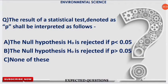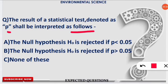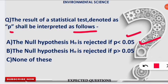The next question is about interpreting the p-value of a statistical test. The correct interpretation: if the p-value is less than 0.05, we reject the null hypothesis and accept the alternate hypothesis. If the p-value is greater than 0.05, we accept the null hypothesis and reject the alternate hypothesis. Option A is correct — please note this down.